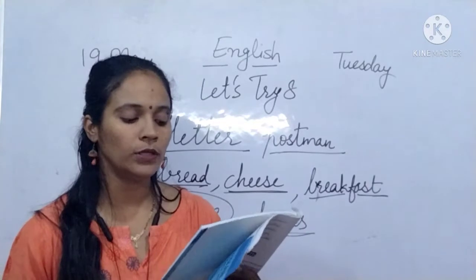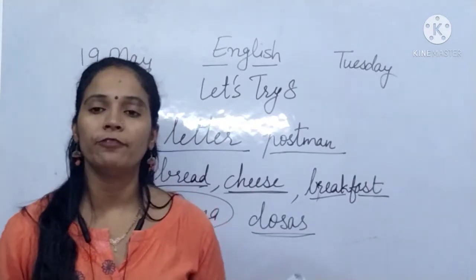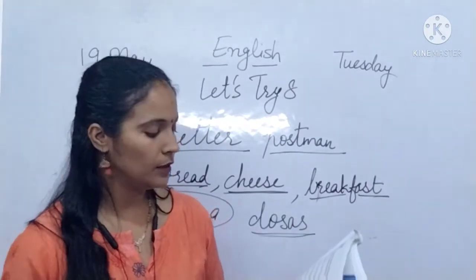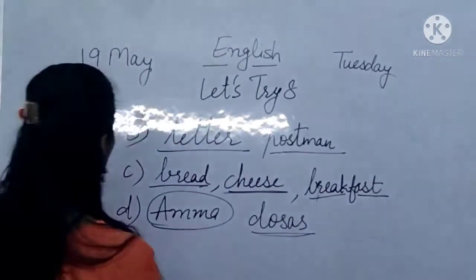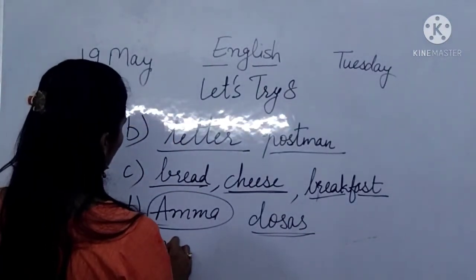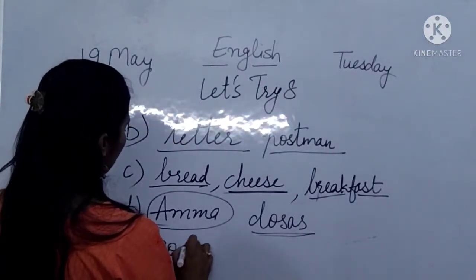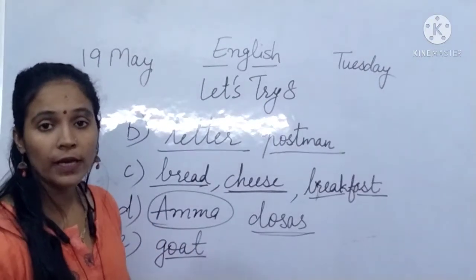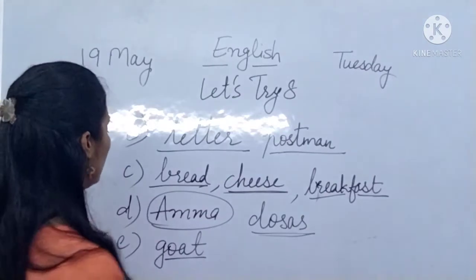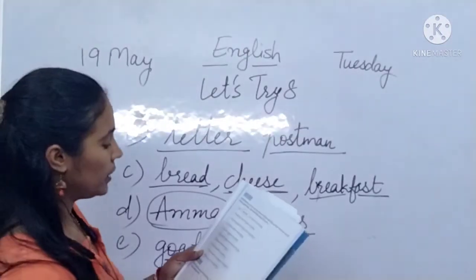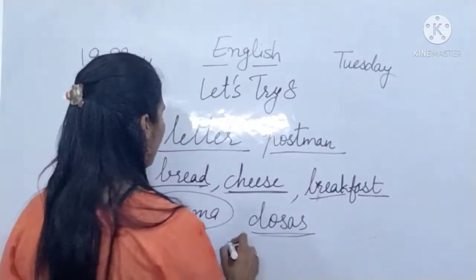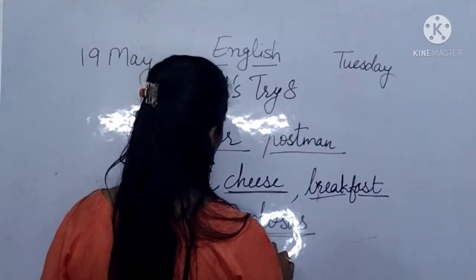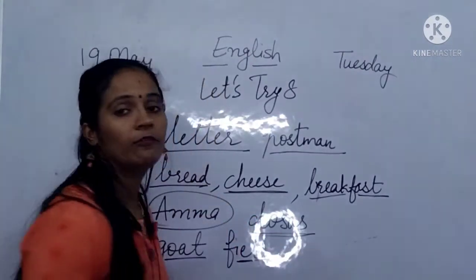Sentence E: there is a goat in the field. Goat is an animal name — it is a common naming word. And field is also a common naming word.